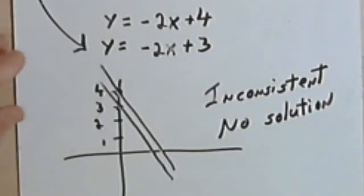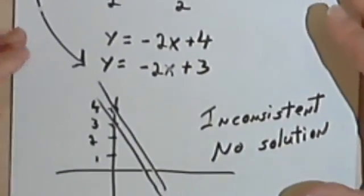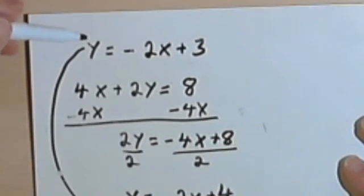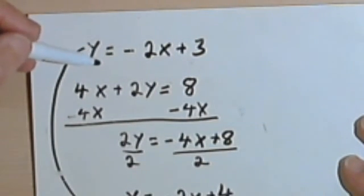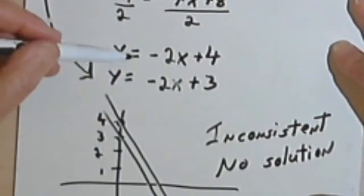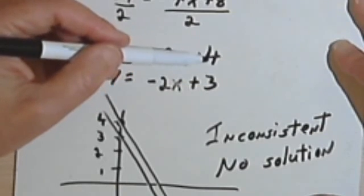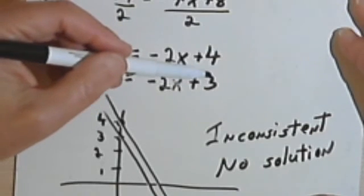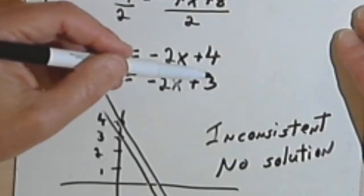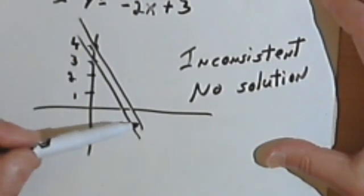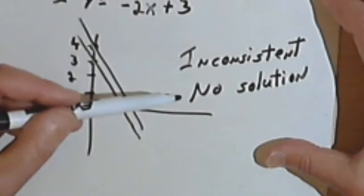Then there are going to be other instances where you're going to have two equations which may look very different to begin with, like these two. But when you start fooling around with their form, you find the only difference is in the constant, which is basically saying the only difference is in the y-intercept. When this happens, you've got what's called inconsistent equations. And because we're dealing with parallel lines, there's no solution.